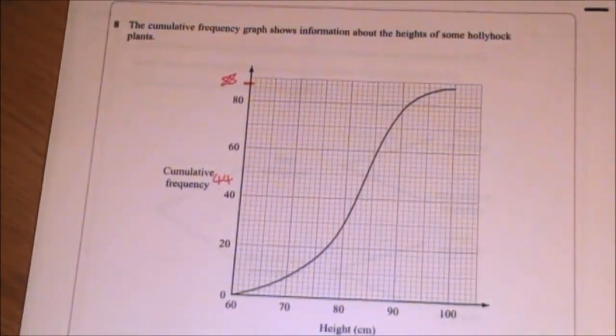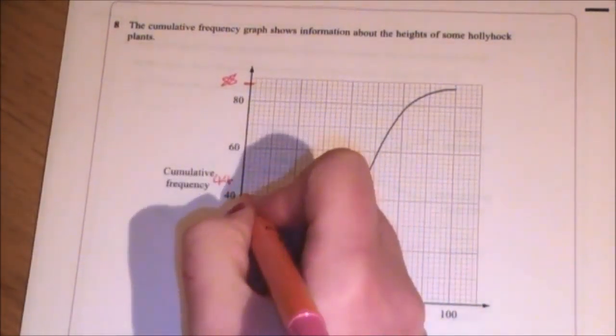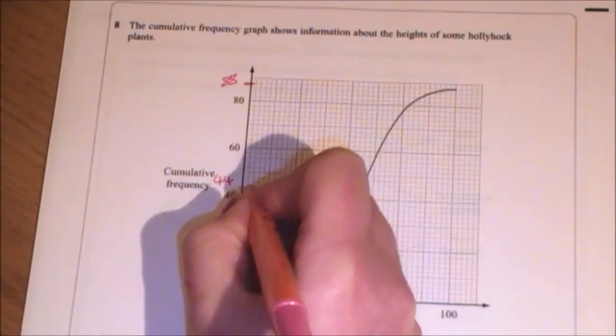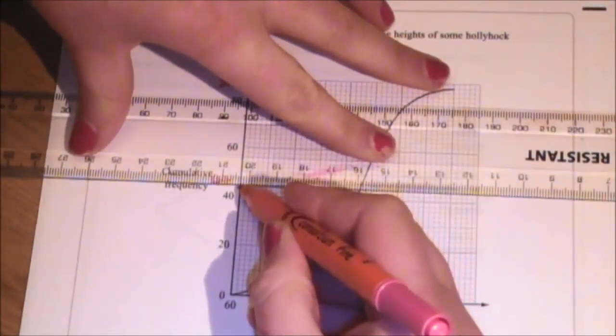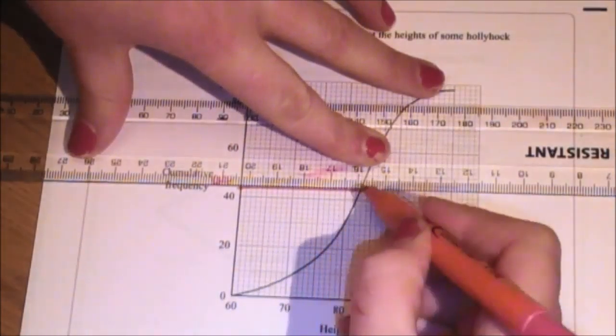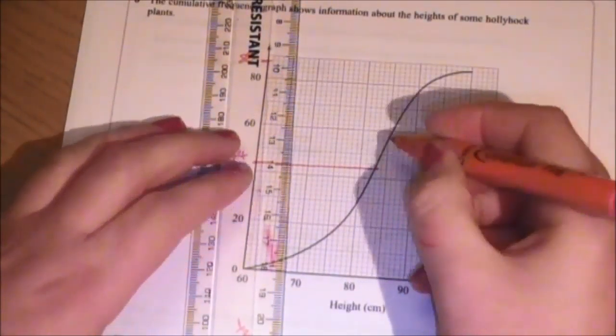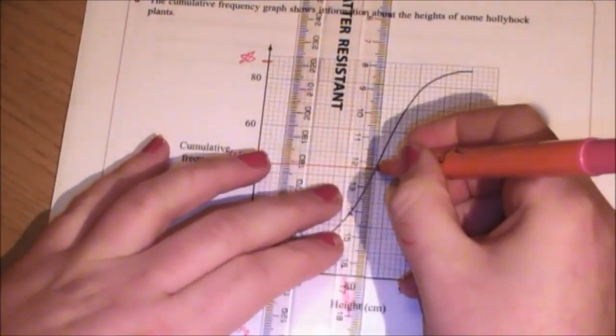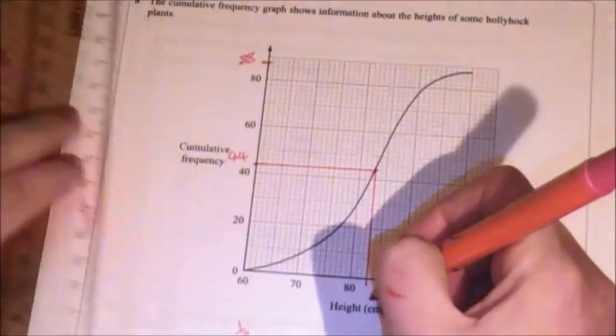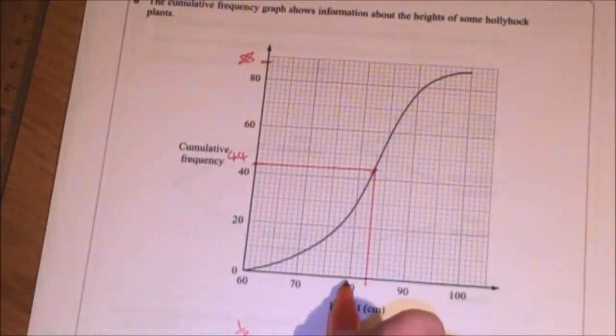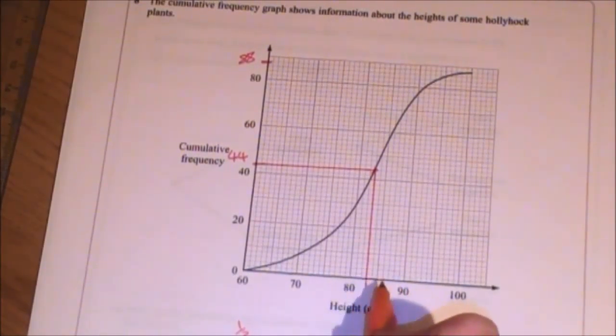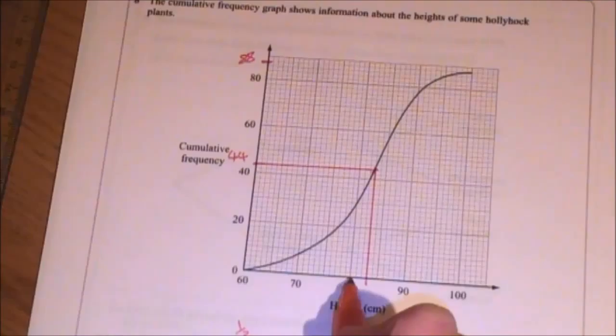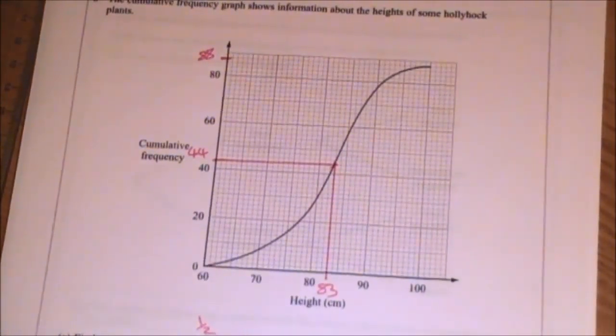There's 40, 42, 44. I'm going to go across, and I'm going to read down. And that's going to give me 80. This is a different scale at the bottom. It goes up by 10 in increments of 10. So it's 81, 82, 83. 83 centimeters is the median.